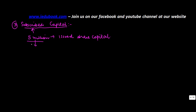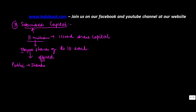In our example, 5 million was the issued share capital, comprising of 500,000 shares of rupees 10 each. Now let's assume the company offered to issue 500,000 shares — that was the issued share capital. The public came in and said they want to subscribe only to 400,000 shares. So this 400,000 shares which have been actually applied by the public are known as subscribed capital.